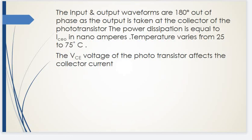The input and output waveforms are 180 degrees out of phase since the output is taken at the collector of the phototransistor. Power dissipation is equal to IC·E0 in nanoamperes, and the temperature varies from 25 to 75 degrees centigrade. The collector-emitter voltage of the phototransistor affects the collector current.